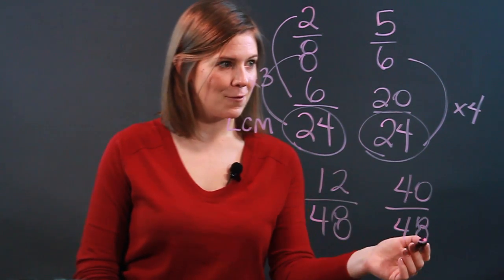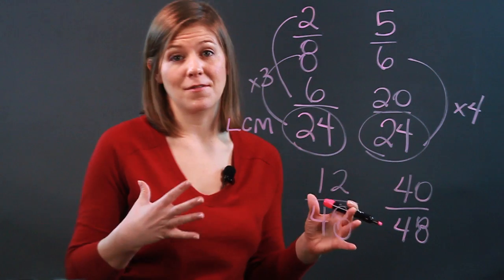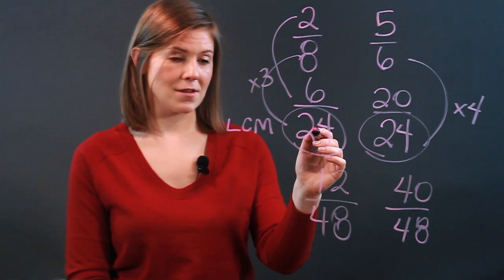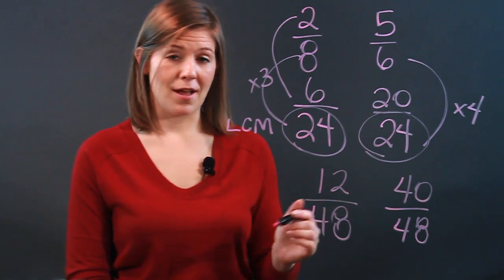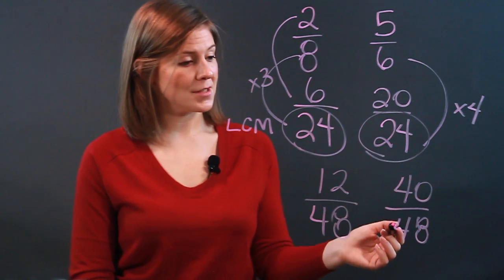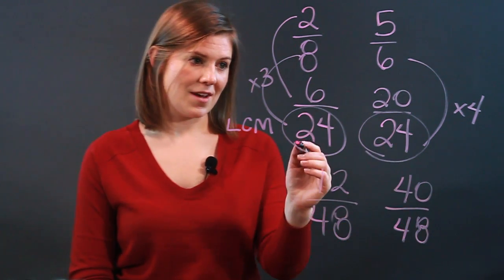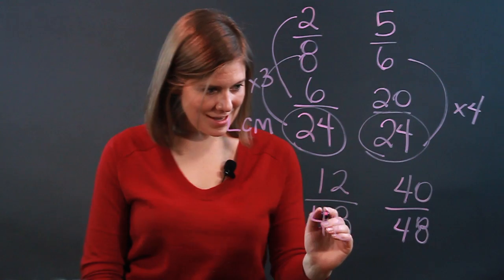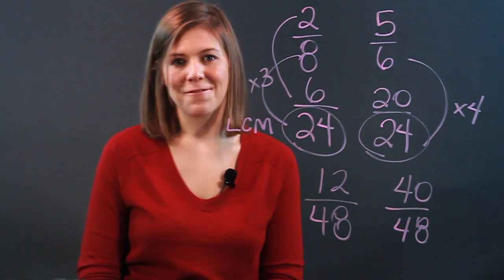Here we've got 12/48 and 40/48. And if you want to apply some of your equivalent rules that you've seen before, you'll see that 6/24 when doubled gives you 12/48, and 20/24 when doubled gives you 40/48. But here we've got 6/24 talking with 20/24, and 12/48 talking with 40/48.